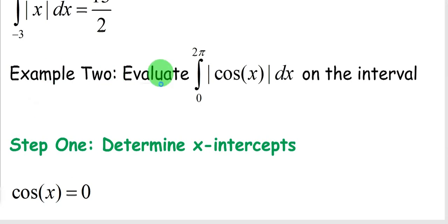All right, let's take a look at example two of evaluating the definite integral of an absolute value function. In this case, we're going from 0 to 2π, and we're taking the definite integral of the absolute value of the cosine of x from 0 to 2π.